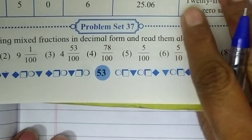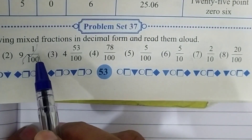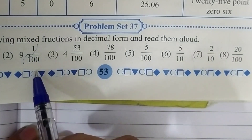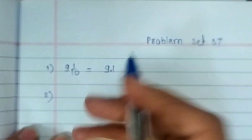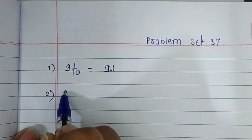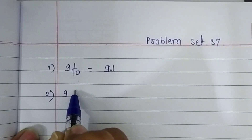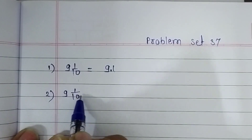The second question is 9 and 1 upon 100. Let's write it in our notebook: 9 and 1 upon 100.